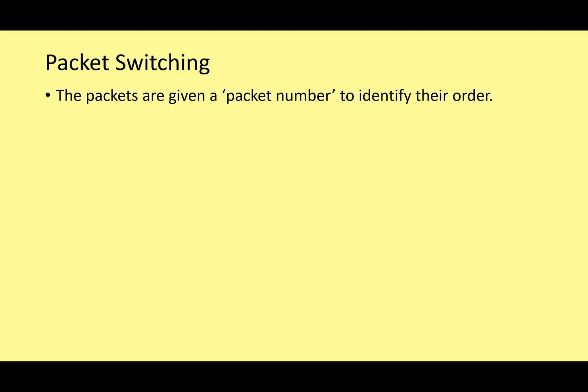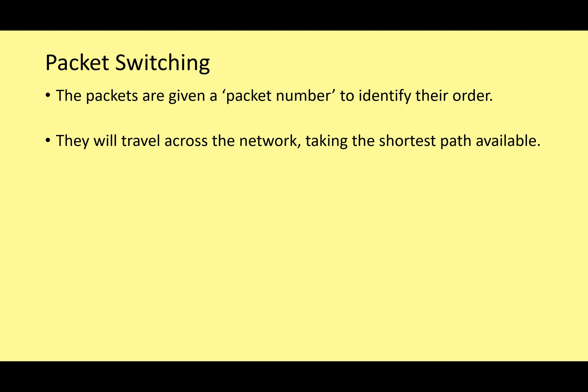The packets are given a packet number to identify their order. They travel across the network taking the shortest path available. This path can change dynamically because of things like network traffic, routers going offline, or different paths being available at different times. So not all the packets are going to travel the same way — this can change during the process.